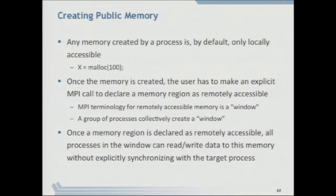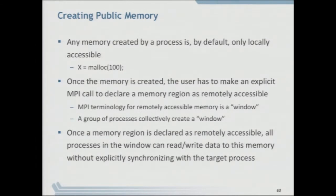The original MPI 2 had only one function for creating the window: MPI_Win_Create, which was collectively called and everyone specified their buffer to be part of this window, or could pass null. There are a few more in MPI 3, so we'll cover all of those.